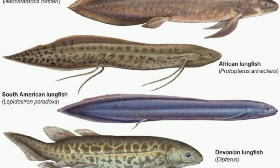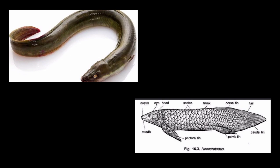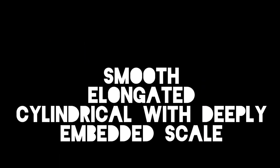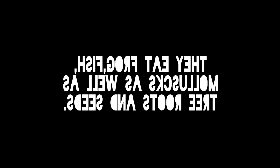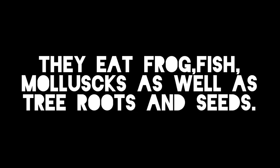Lungfish are smooth, elongated, and cylindrical with deeply embedded scales. Lungfish eat frog, fish, and mollusk, as well as prey, roots, and seeds.